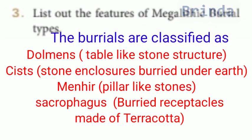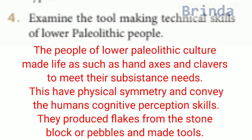Third brief answer: list out the features of megalithic burial types. The burials are classified as dolmens — stable-like stone structures; cysts — stone enclosures buried under earth; menhirs — pillar-like stones; and sarcophagus — receptacles made of terracotta. Fourth question: explain the tool-making technical skills of lower Paleolithic people. The people of lower Paleolithic culture made handaxes and cleavers to meet their subsistence needs. They have physical symmetry and convey humans' cognitive perception skills. They produced flakes from stone blocks or pebbles and made tools.